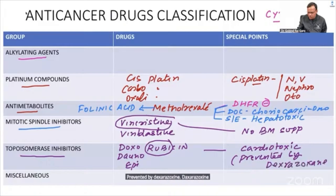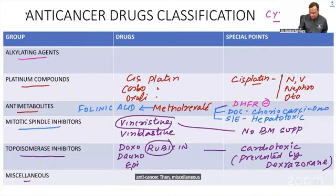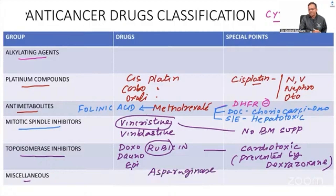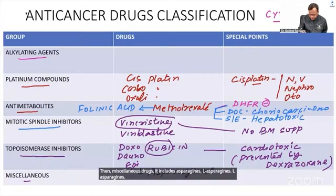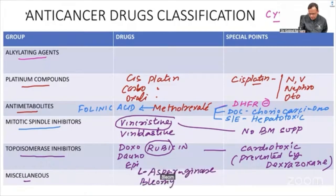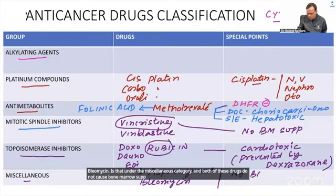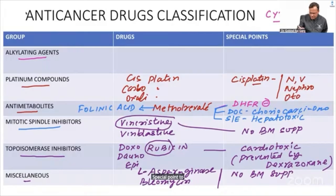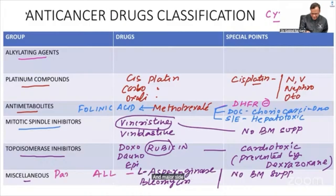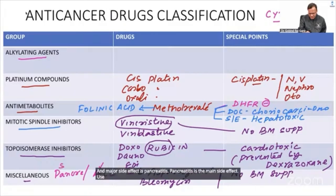Miscellaneous anti-cancer drugs include L-asparaginase and bleomycin. Both of these drugs do not cause bone marrow suppression. L-asparaginase is used for acute lymphoid leukemia, and its major side effect is pancreatitis.